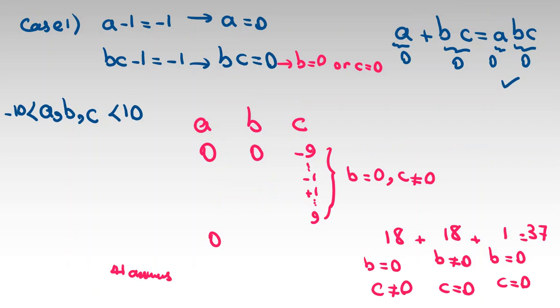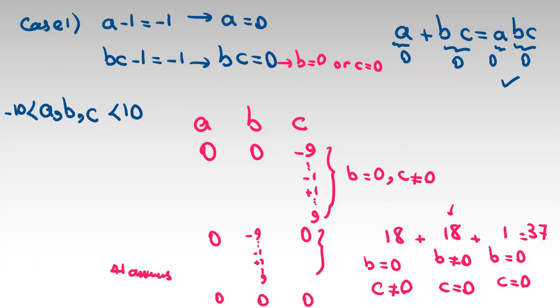So 4 plus 37 equals 41 answers. 18 answers here, 18 answers here, one answer here, that is 37, and 4 from previous ones, so 41 answers.